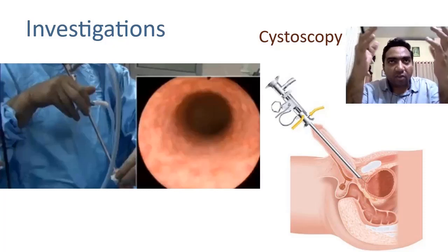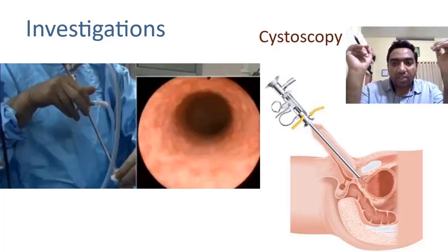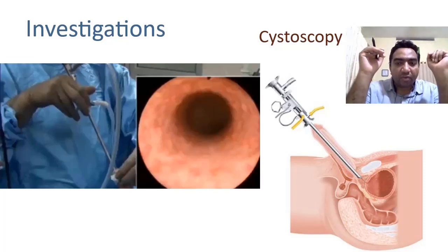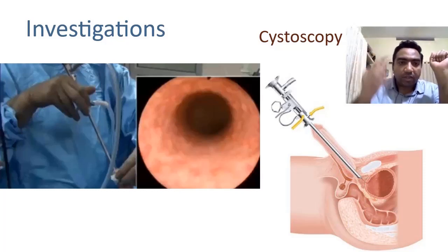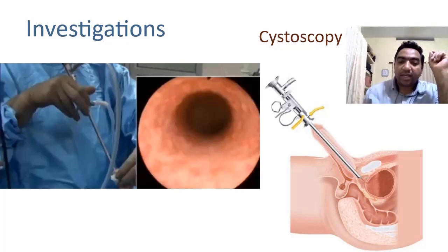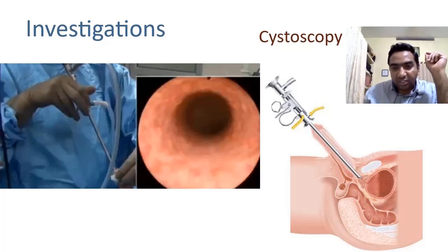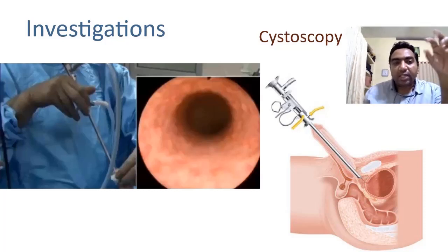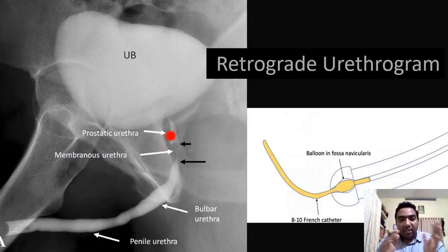Now coming to investigations of the urethra: to see the internal anatomy of the urethra, we use cystoscopy — passing the scope through the urethra to reach the bladder — performing both cystoscopy and urethroscopy to see the internal anatomy. Now, to see the external anatomy of the bladder and urethra as a whole, we use other methods.